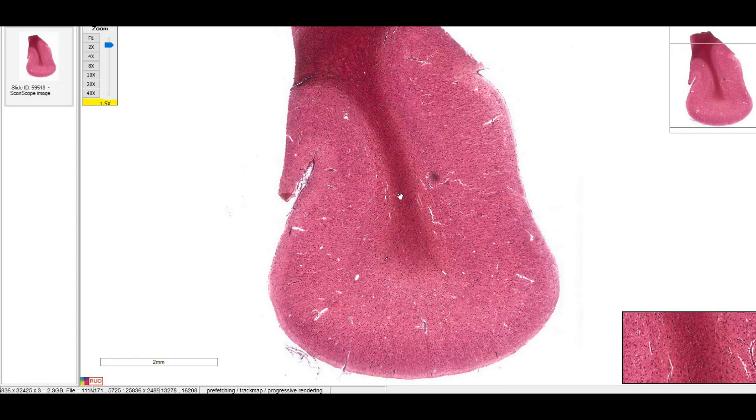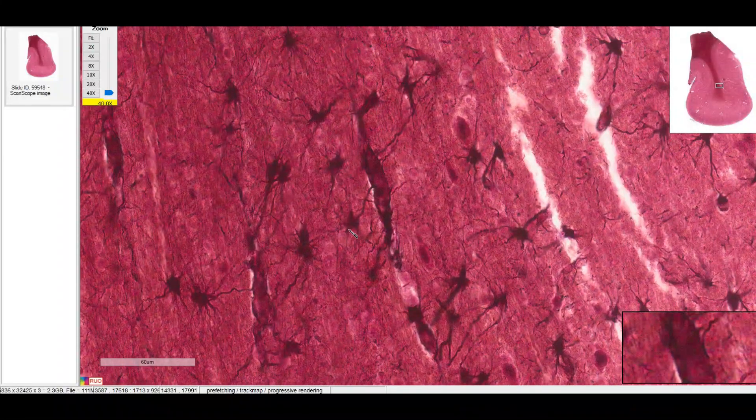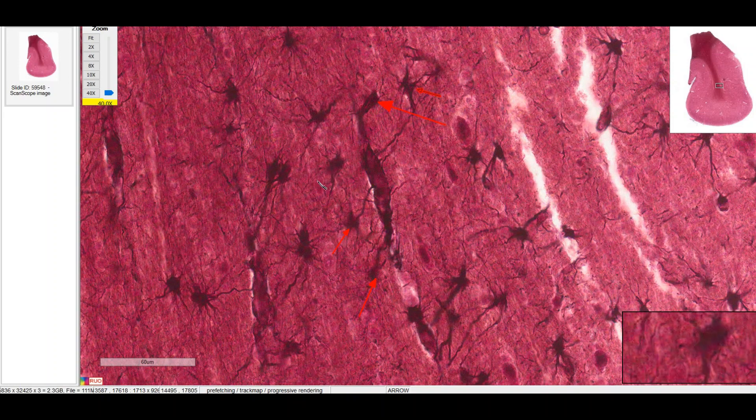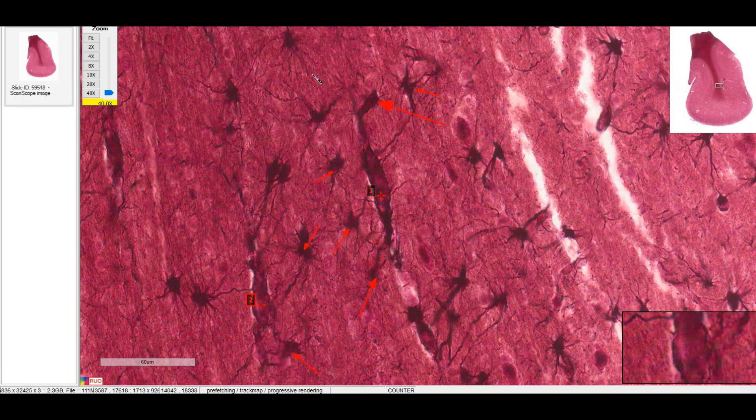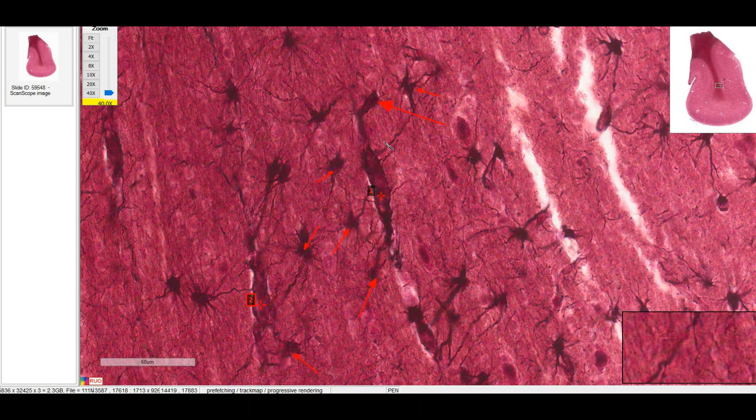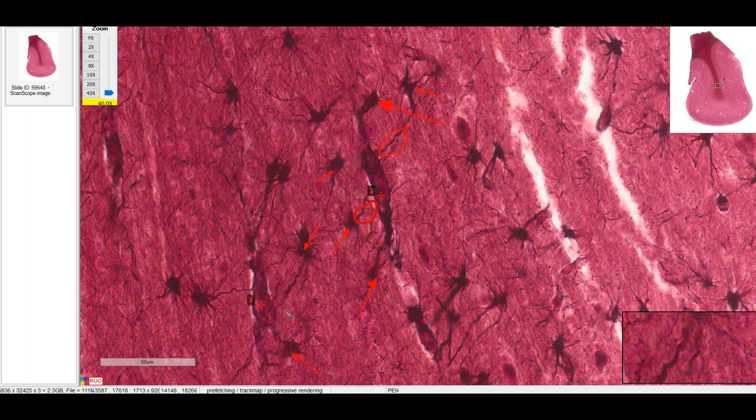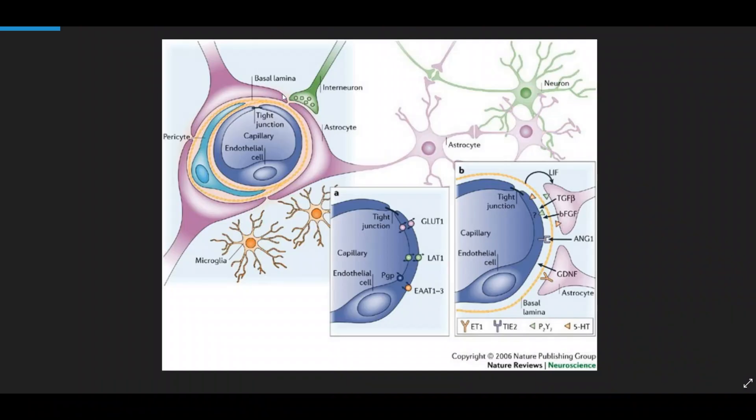Let's zoom in on the white matter here. Here we can see lots of astrocytes because the stain is specifically staining for astrocytes. We've got these two blood vessels here. And you can see all these foot processes extending towards the blood vessel to become part of the blood-brain barrier. This coating of blood vessels by the astrocytes and processes, it's called the perivascular glialimitans.